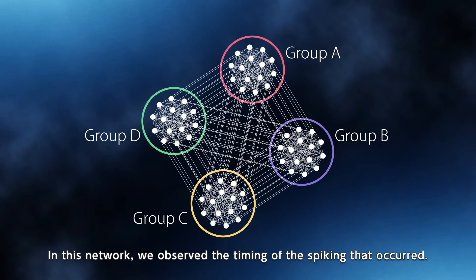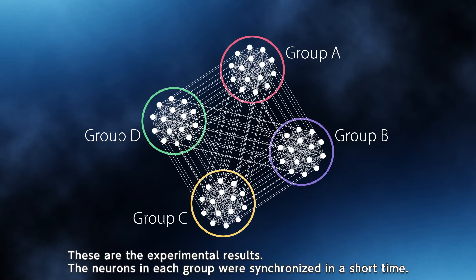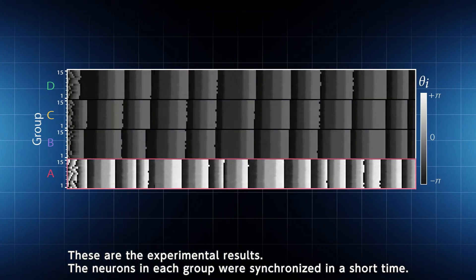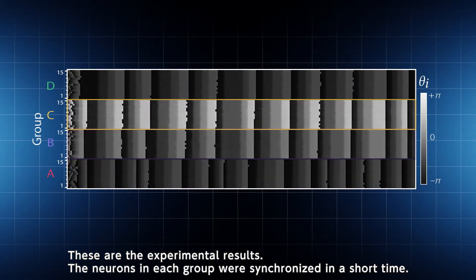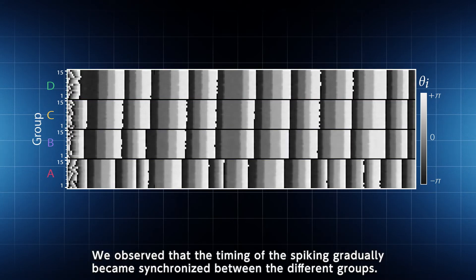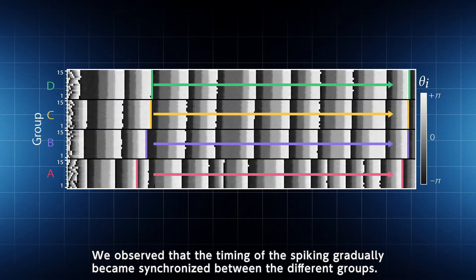In this network, we observed the timing of the spiking that occurred. These are the experimental results. The neurons in each group were synchronized in a short time. We observed that the timing of the spiking gradually became synchronized between the different groups.